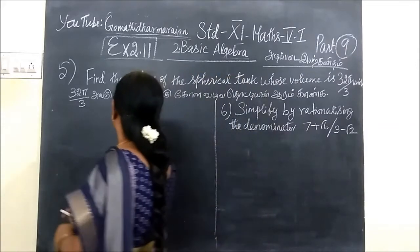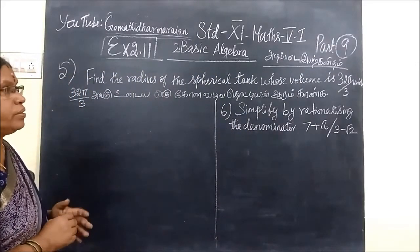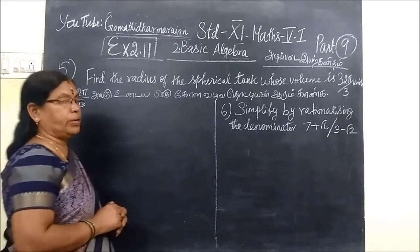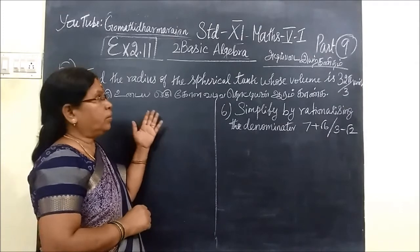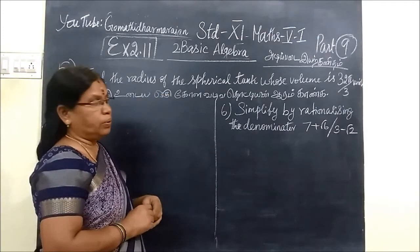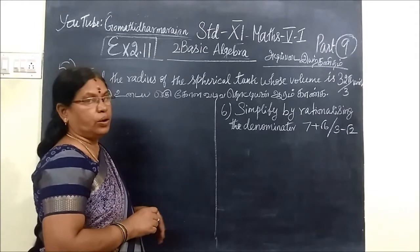Find the radius of the spherical tank whose volume is 32 pi by 3 cubic units. It is one of the application questions. It is one of the basic algebraic problems. Next question is simplify by rationalizing the denominator.